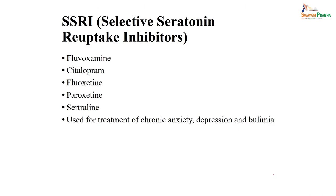There is another group of drugs called selective serotonin reuptake inhibitors (SSRIs). These drugs are most commonly used in chronic anxiety, depression, or bulimia in psychiatric conditions. Typical examples include fluvoxamine, citalopram, fluoxetine, paroxetine, and sertraline. These are the most commonly used SSRIs, used for chronic anxiety, depression, and bulimia.